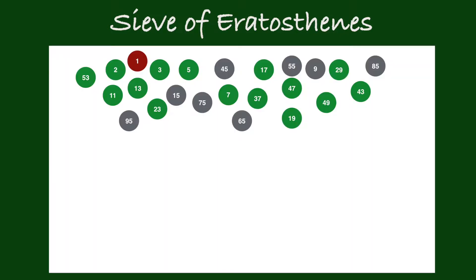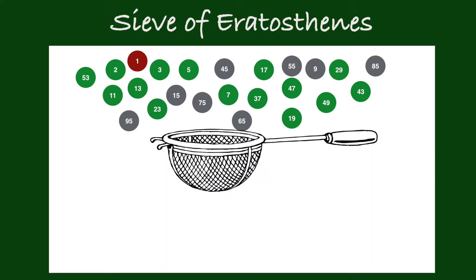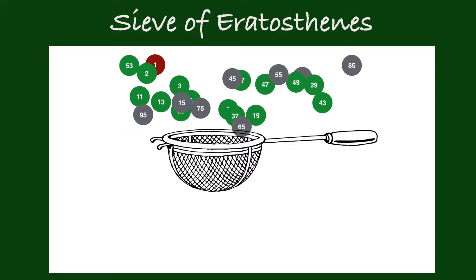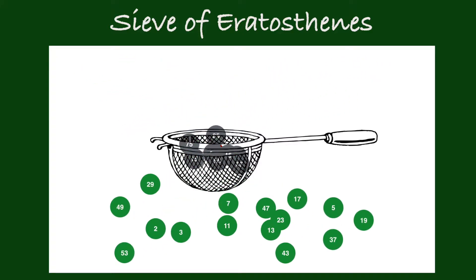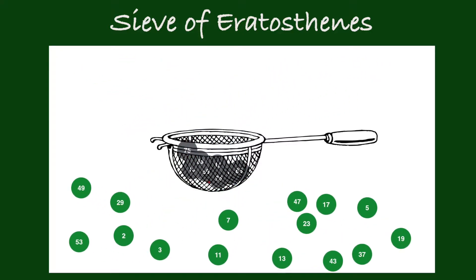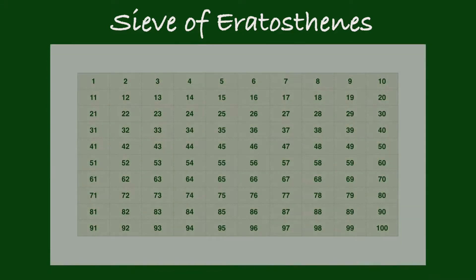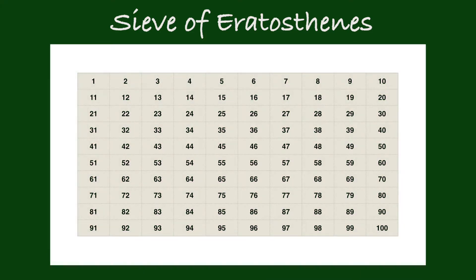The Sieve of Eratosthenes is a method used to find prime numbers. You can use this to find prime numbers up to infinity, but since it's a very manual process, I'll only use it to demonstrate finding prime numbers that are less than 100.